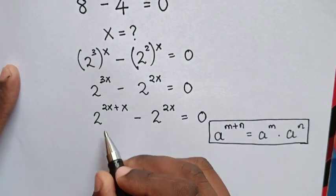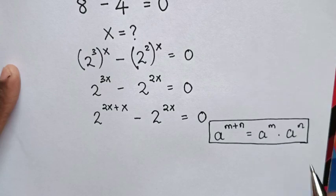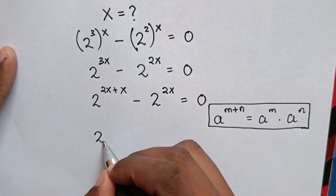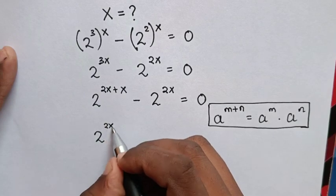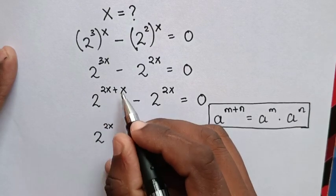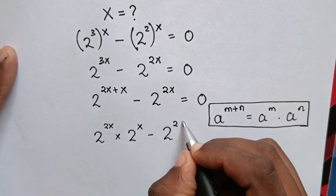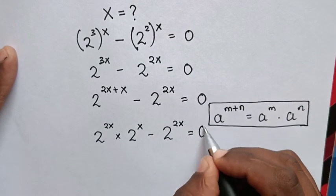So here it will be multiplication of exponents, which is 2^2x times 2^x minus 2^2x = 0.